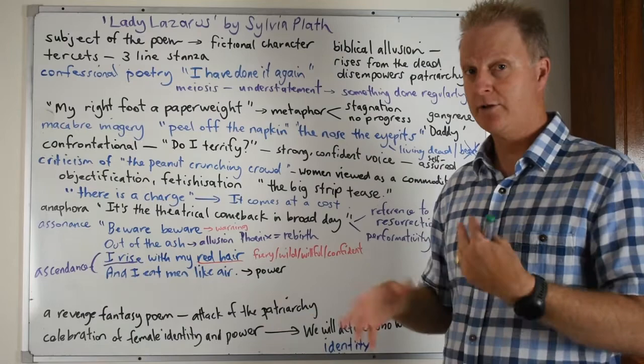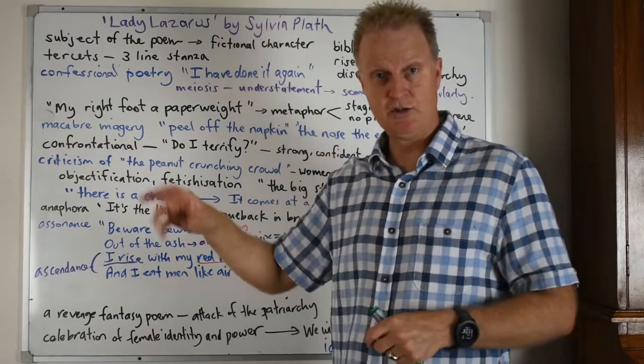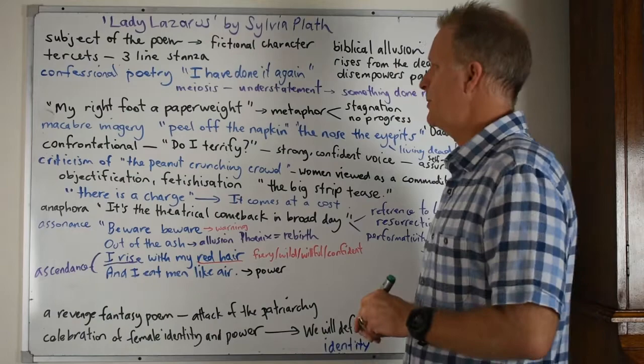She comes back to disempower the patriarchy and is a very strong, powerful character. The poem is written in tercets, which are three-line stanzas, which Plath seems to do quite a bit.